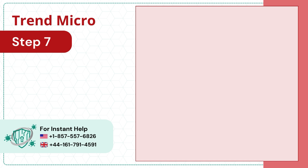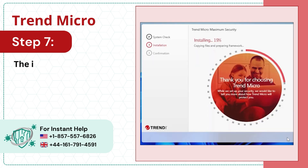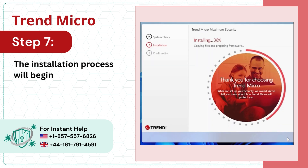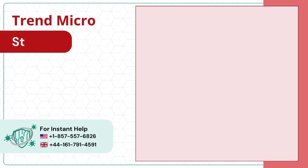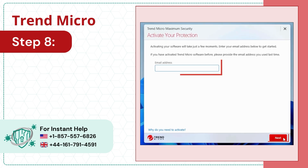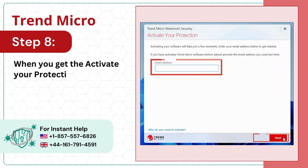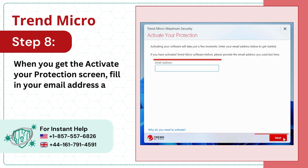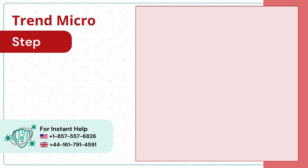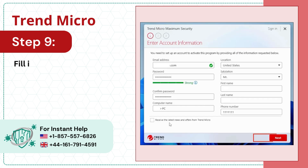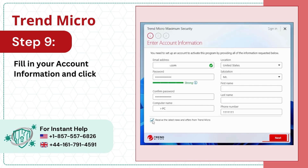Step 7: The installation process will begin. Step 8: When you get the Activate Your Protection screen, fill in your email address and click Next. Step 9: Fill in your account information and click Next.